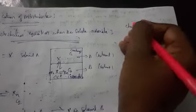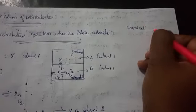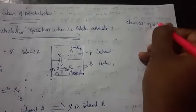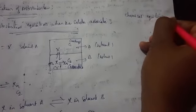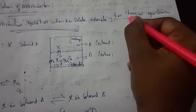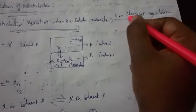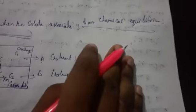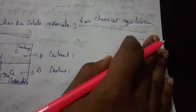According to the definition of chemical equilibrium — the law of chemical equilibrium — the concentration of products divided by the concentration of reactants gives the equilibrium constant. This is the law of chemical equilibrium.